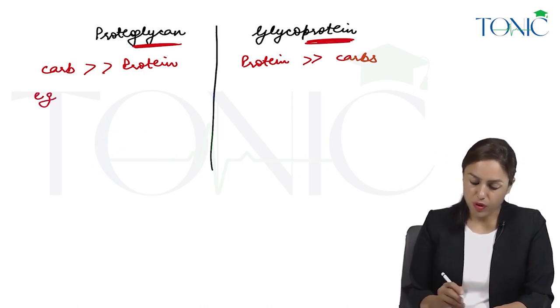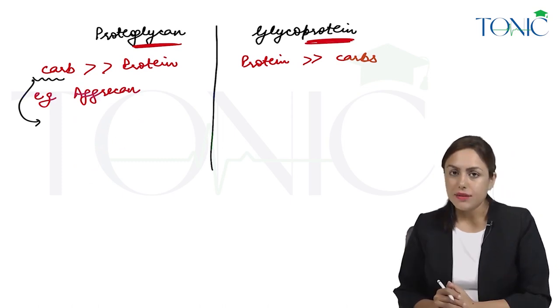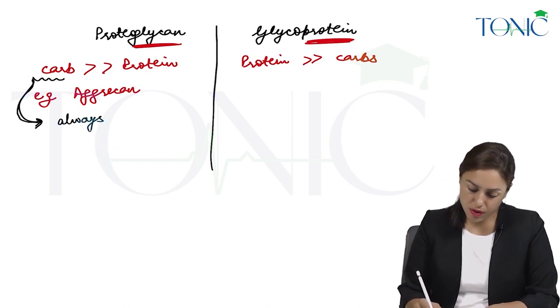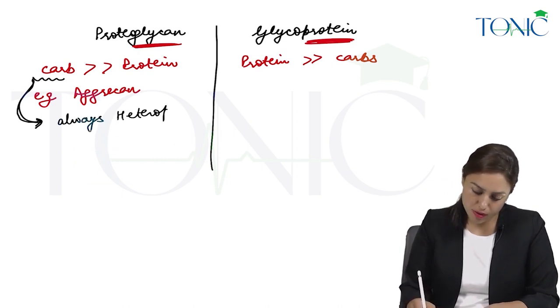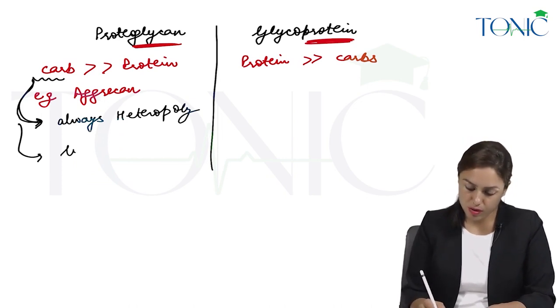Example of proteoglycan I have already told you, example is agri-can, and the carbohydrate of proteoglycan is always a heteropolysaccharide and this carbohydrate is linear.